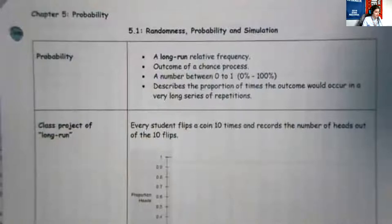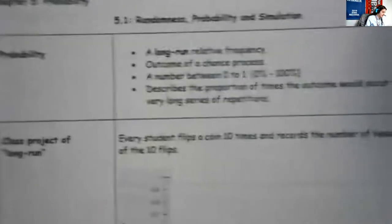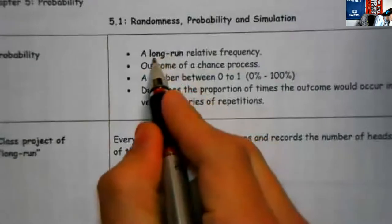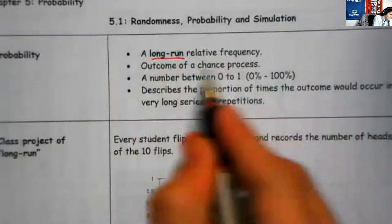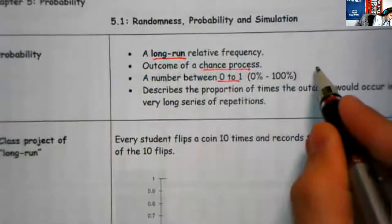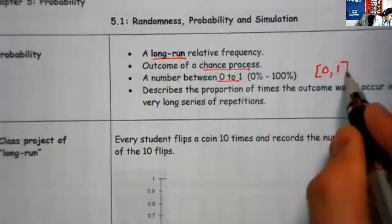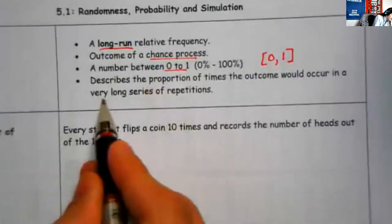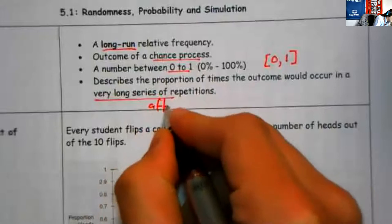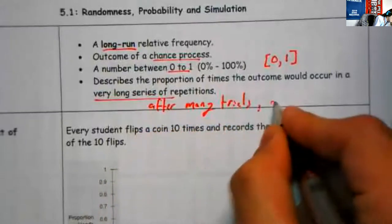So 5.1, randomness, probability, and simulation. We got to first define what the heck, what does this word probability mean? Probability. That's a long-run relative frequency. Outcome of a chance process. It's a number between 0 and 1. We might write that as all probabilities on the interval, 0 to 1 inclusive. This describes the proportion of times the outcome would occur in a very long series of repetitions, after many trials, after a long time.